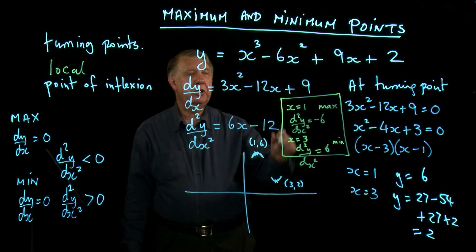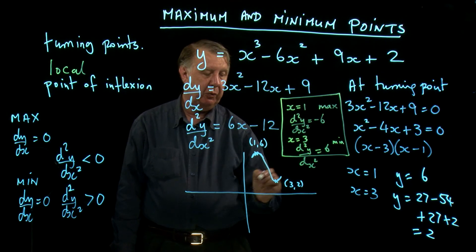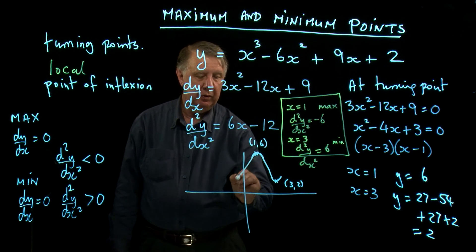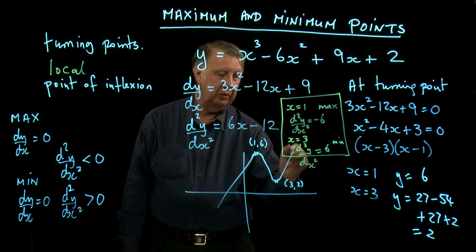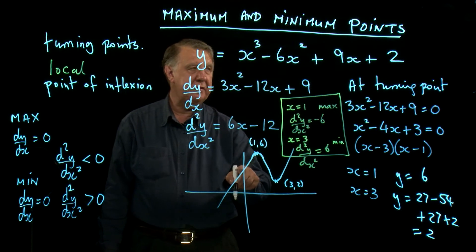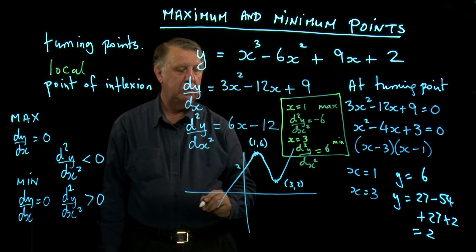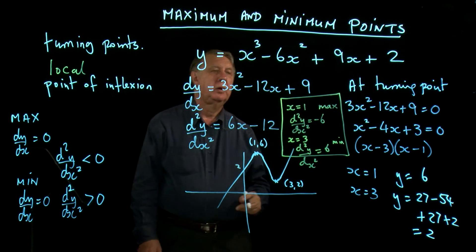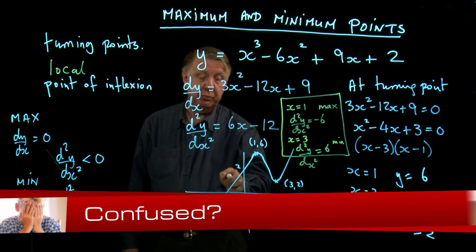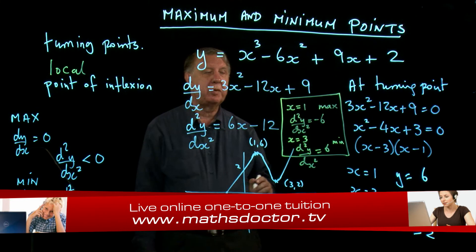And we know it's a cubic. There's only one way it can get from there to there, which is like that. And then it must do something like that. This point here, if we're interested in this, is of course going to be 2, because if x is 0, then y is 2. I haven't been asked to find that point. It won't be particularly easy. So there's my sketch.